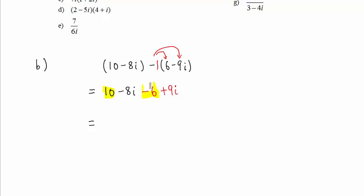Gathering like terms, 10 minus 6 is positive 4. Negative 8i plus 9i is positive 1i, so we write plus i, and our answer is 4 plus i.